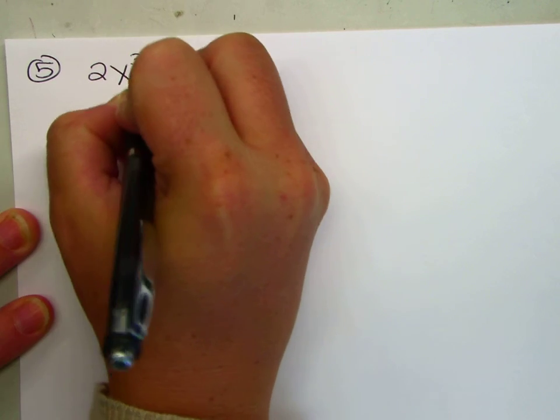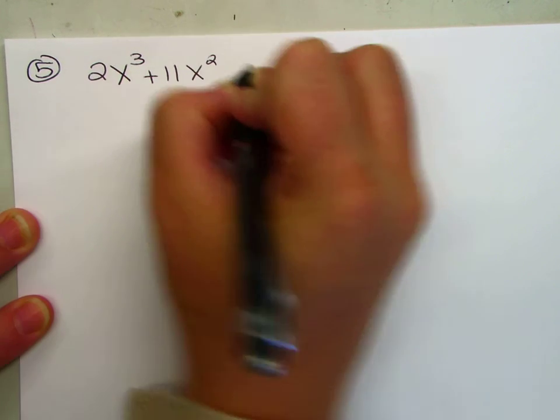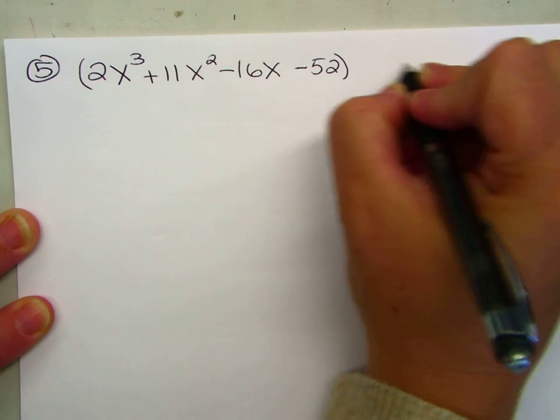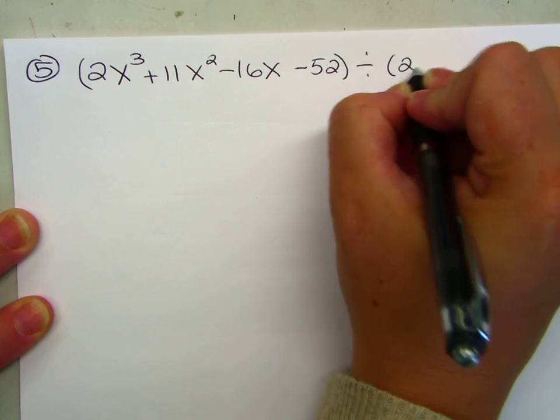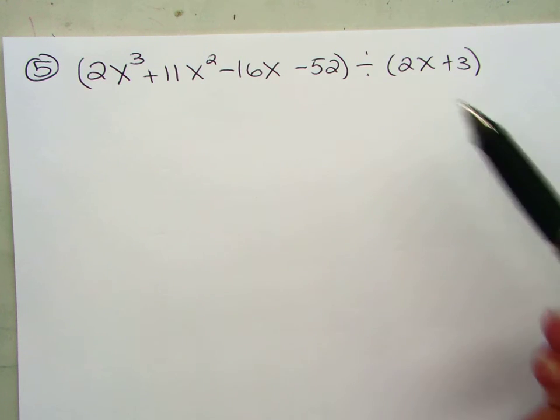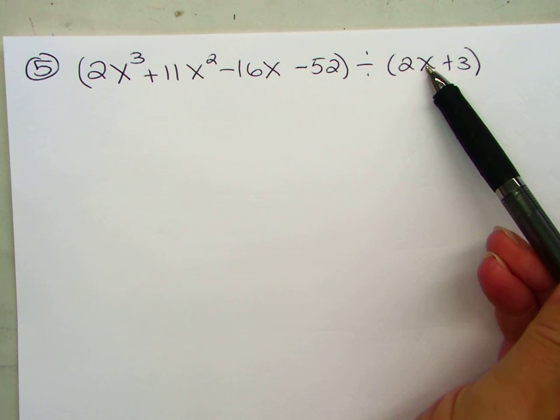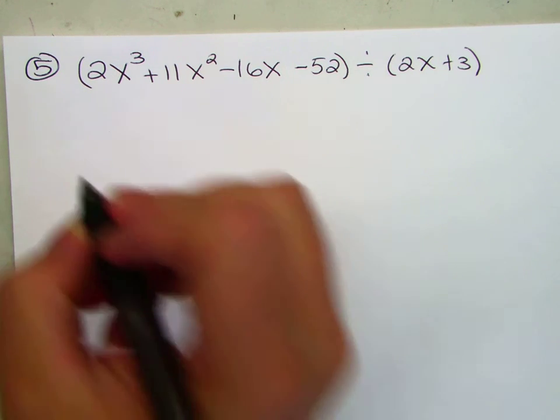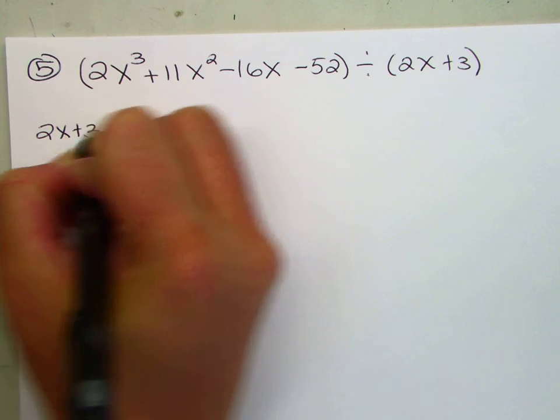Number 5, 2x to the third plus 11x squared minus 16x minus 52 divided by 2x plus 3. Pause the video, try it on your own on a piece of paper, check that you did it right. This one's a little harder. There's a 2 in front of the x, so it's not just x every time. We have a coefficient in front of it, so that makes it a little harder. But it's the same exact process, nothing's changing.